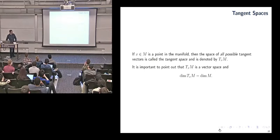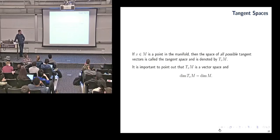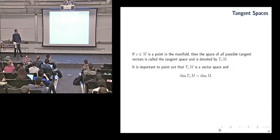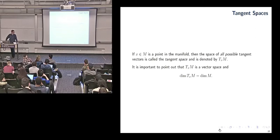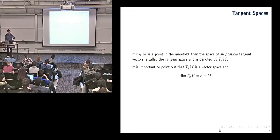If we choose a point x in our manifold, the tangent space T_x(M) is always a vector space, so you can always view it as R^n — which is much nicer than the manifold itself, which only looks like R^n locally. The tangent space always is R^n. The dimension of the tangent space and the dimension of the manifold always agree.